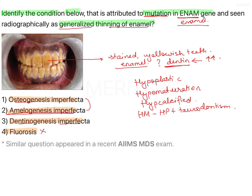Many genes can be responsible, one of which is the Enam gene, and another is the Amelx gene. In general, this is an autosomal recessive or dominant trait depending on the feature or gene causing the defect. This genetic condition is very commonly confused with fluorosis, but generalized thinning of enamel is one of the most characteristic radiographic features.